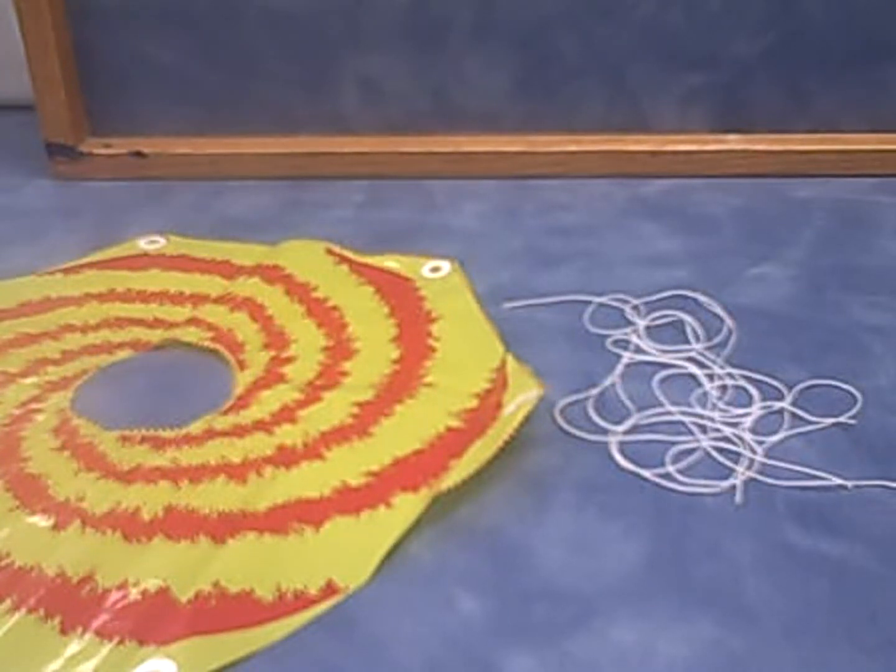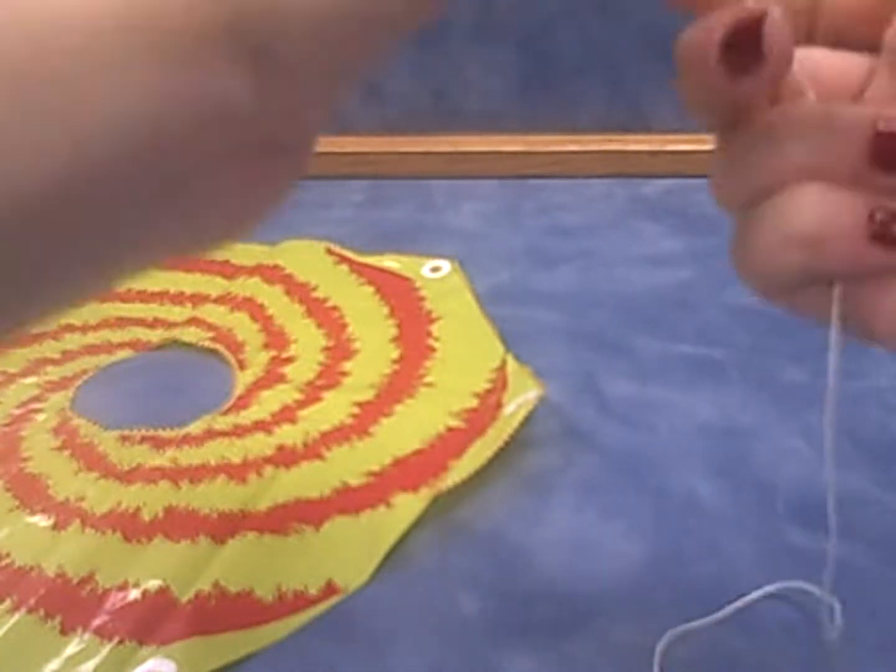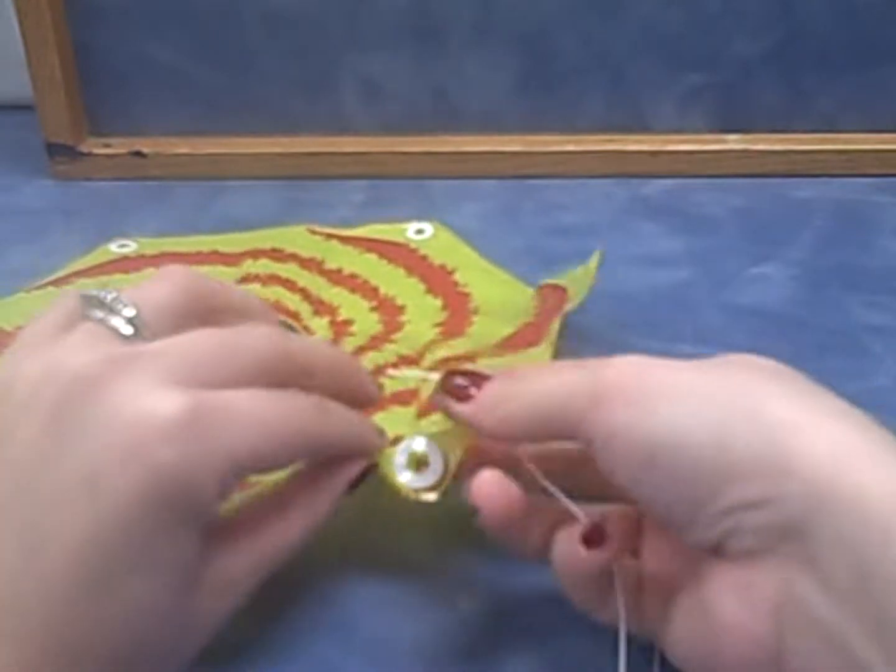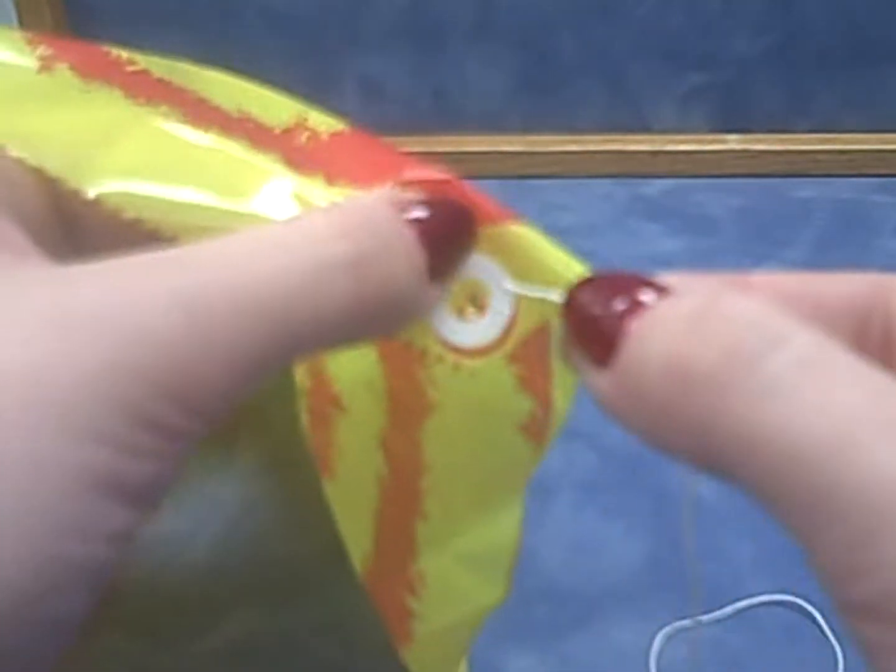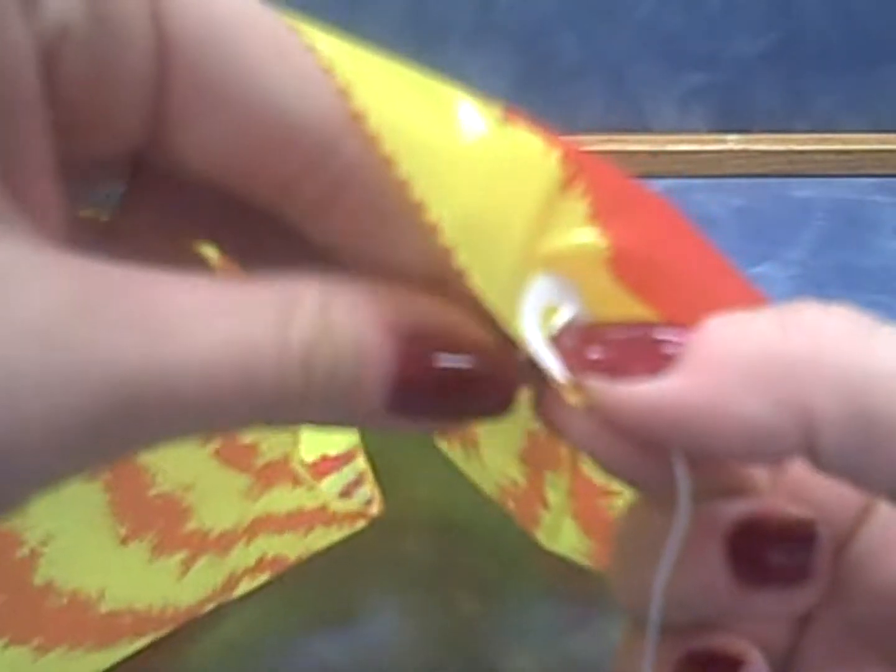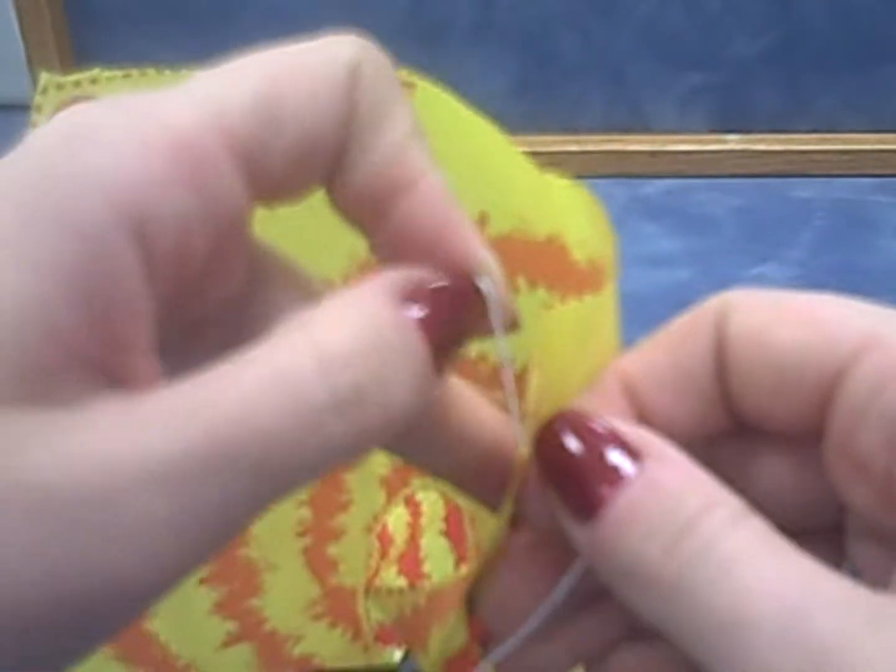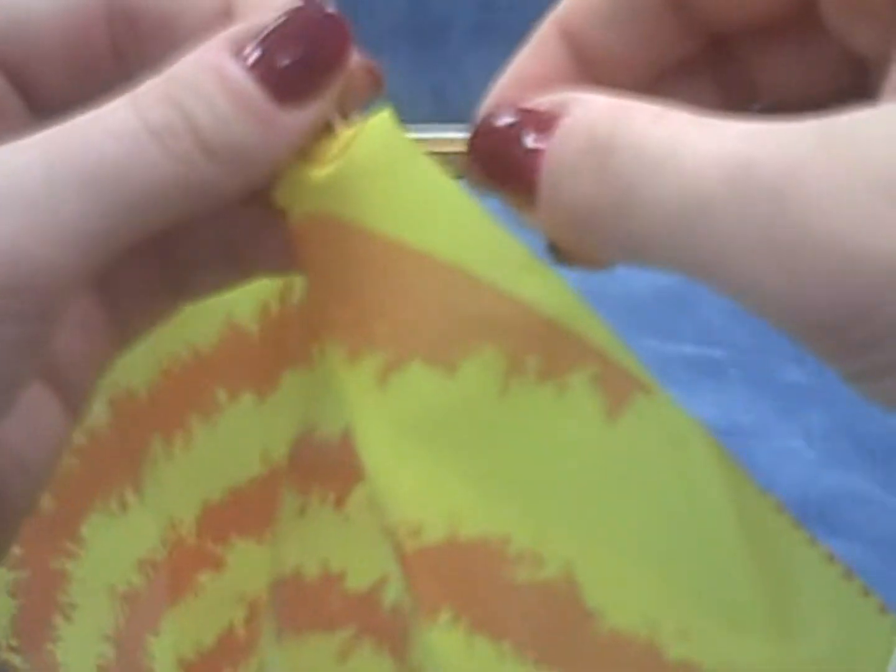Now we need to tie our string to our parachute. Go ahead and grab one string, locate one end, pick one of the holes, place the string through like this, bring it around and you're going to tie a double knot.